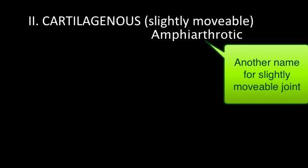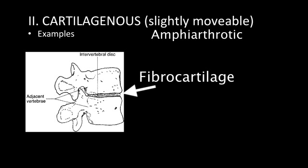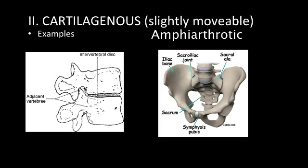Another type of joint is a cartilaginous joint. These are slightly movable because there's a pad of fibrocartilage separating the two bones, and that fibrocartilage allows for a little bit of motility. An example would be the intervertebral joints of the spine — the intervertebral discs are made of fibrocartilage with a pulpy center that allows slight movement. Another example is the symphysis pubis, where the two pubic bones meet, and the sacroiliac joint between the sacrum and iliac of the os coxa.